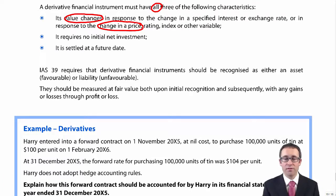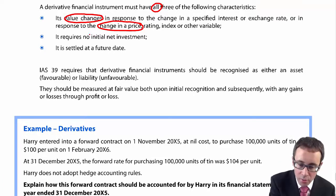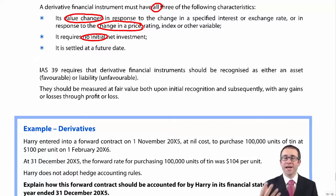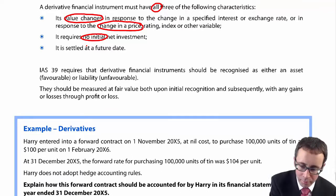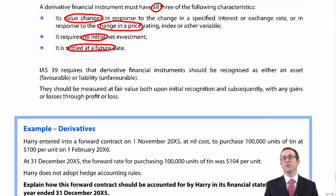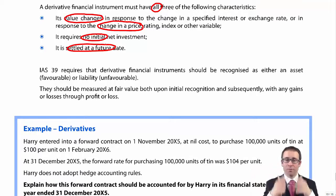For it to be a derivative, it also requires no initial net investment. It doesn't necessarily have to cost nothing to enter into — there might be a very small payment — but as long as it is small relative to the overall value of the contract. With a forward contract, you could enter into it without any payment whatsoever. The other important criterion is that it is settled at some point in the future. So you enter into the contract today in January and settle it in May, June, or July.